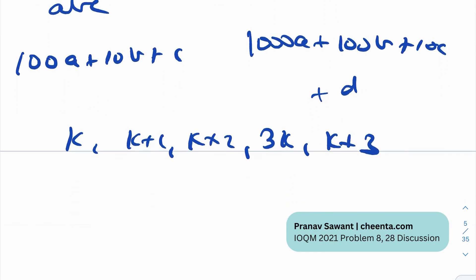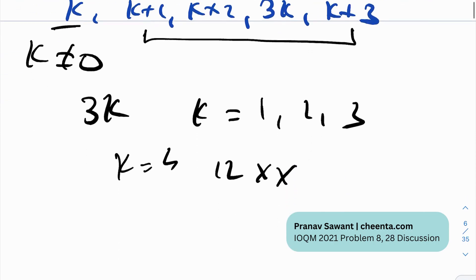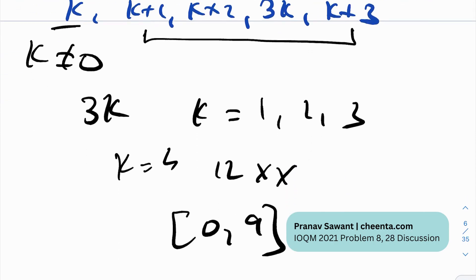And what are certain observations that I can make from this? So first of all, it's a five-digit number, so k cannot be zero. Because if k was zero, then it would be a four-digit number. So k cannot be zero. The second observation is one of the digits is three k, so k can effectively only be one, two, and three. Because if k is equal to four, it would become 12, and 12 is not a digit. Digit is only from zero to nine. These are digits. 12 is not a digit. So k can only be one, two, and three, and this really helps us to simplify things.